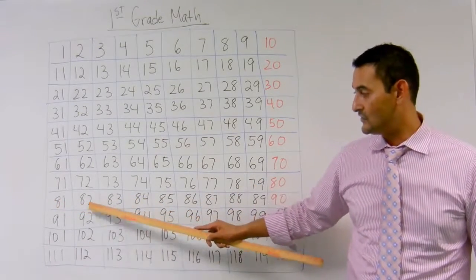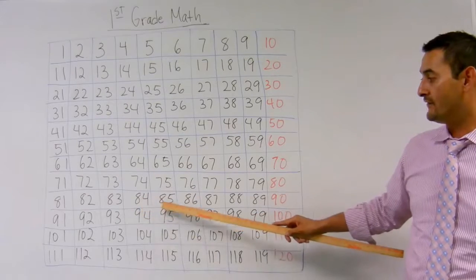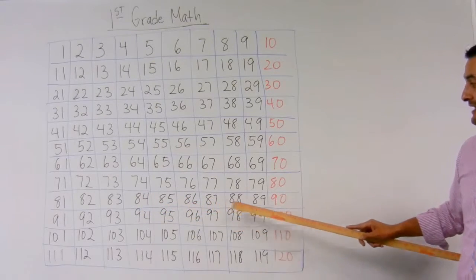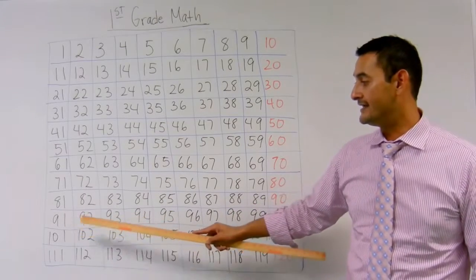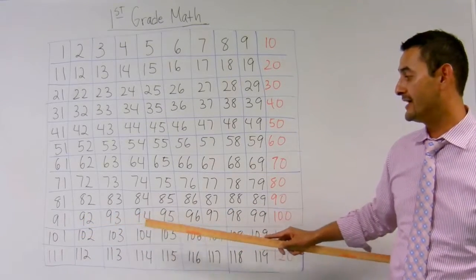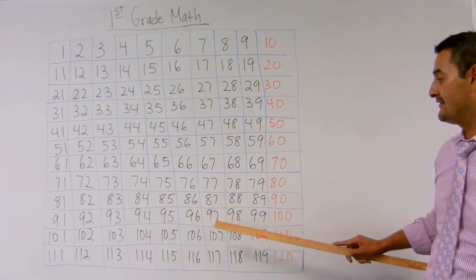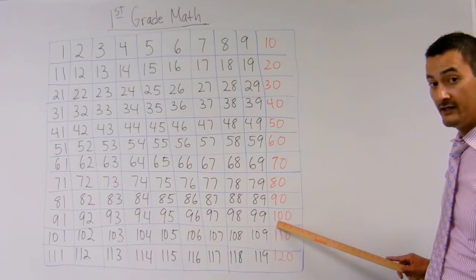Ready? 81, 82, 83, 84, 85, 86, 87, 88, 89, 90, 91, 92, 93, 94, 95, 96, 97, 98, 99, 100.